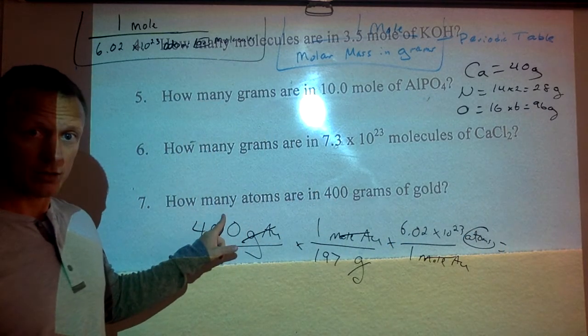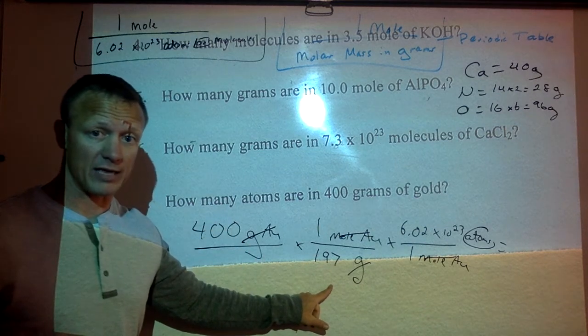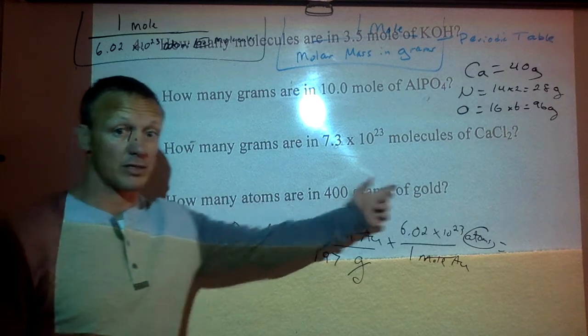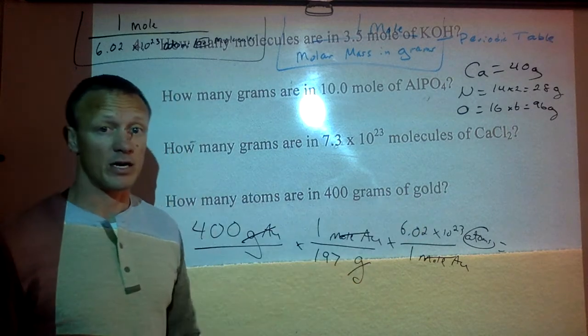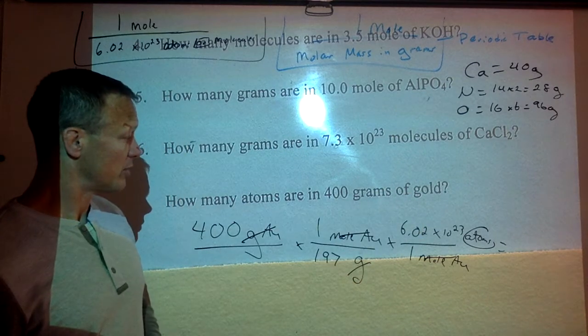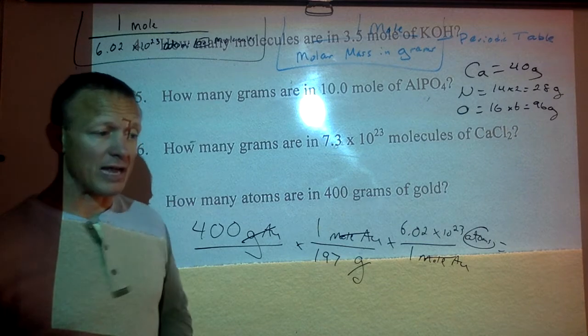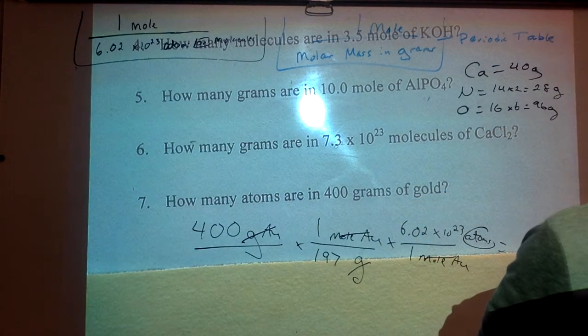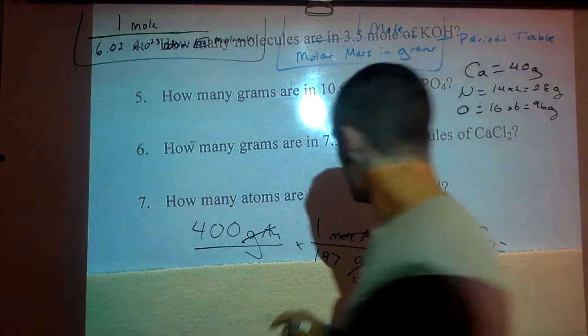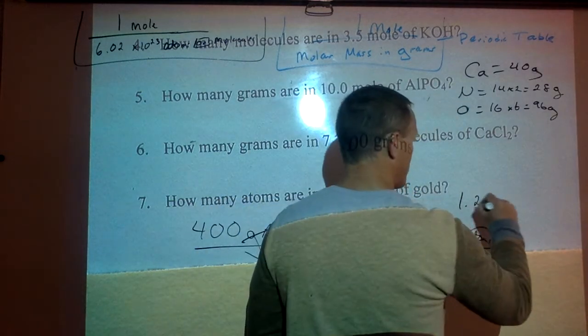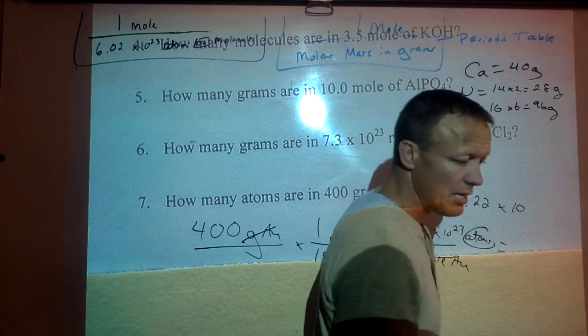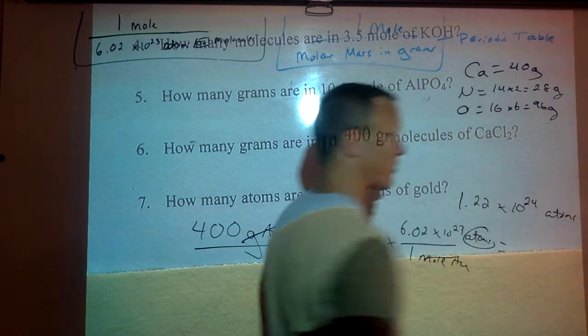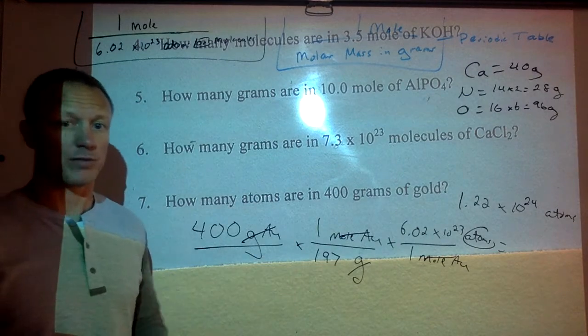So we're multiplying 400. We're dividing by 197, and we're multiplying by Avogadro's number. It doesn't matter what order you do that in. You can take 400 times Avogadro's number divided by 197, but that's what you're going to. Your answer should be in scientific notation. Your answer there is 1.22 times 10^24 atoms. There's a lot of atoms in a 400-gram sample of gold.